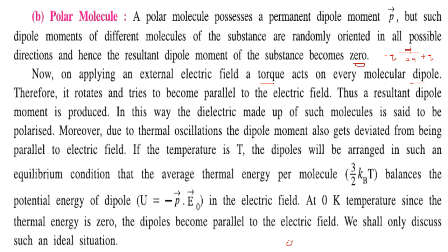The torque causes each dipole to rotate and try to become parallel to the electric field, producing a resultant dipole moment. The dielectric made of such molecules is then said to be polarized. Due to thermal collisions, dipole moments also deviate from being parallel to the electric field. The average thermal energy per molecule (3/2 k_B T) balances the potential energy of the dipole (−P·E). At 0 Kelvin, since thermal energy is zero, the dipoles become perfectly parallel to the electric field.